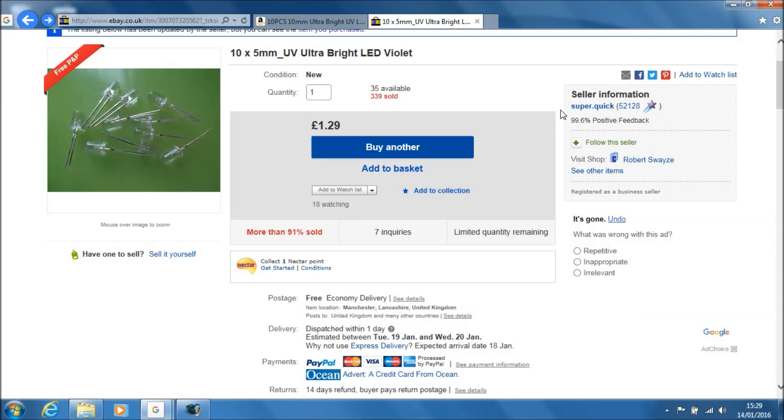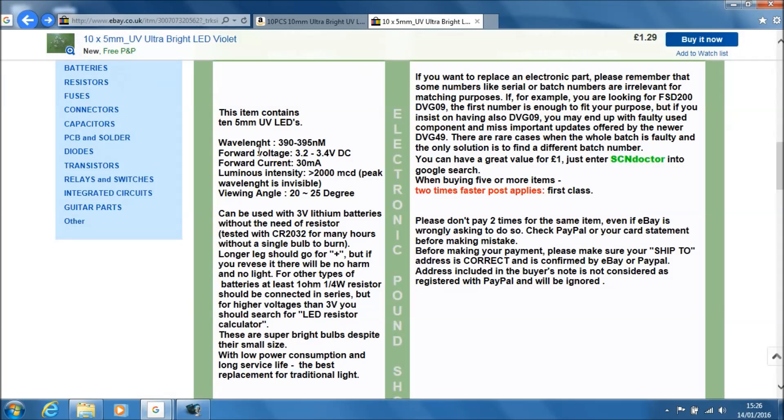The second set of LEDs came from an eBay seller called SuperQuick and in this case I paid £1.29 for 10 5mm LEDs. It says the dominant wavelength 390 to 395 nanometers. Forward voltage 3.2 to 3.4 volts and the forward current is 30 milliamps. The luminous intensity is greater than 2000 millicandelas. So that's wildly different from the last set. Viewing angle is 20 to 25 degrees.